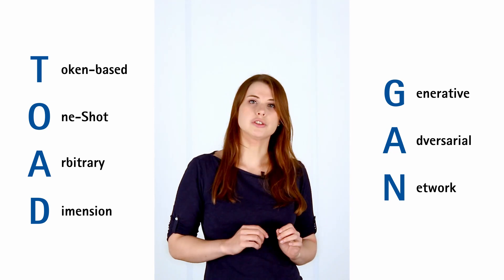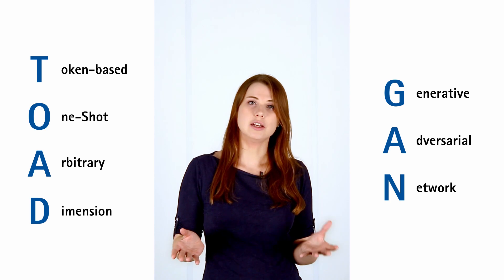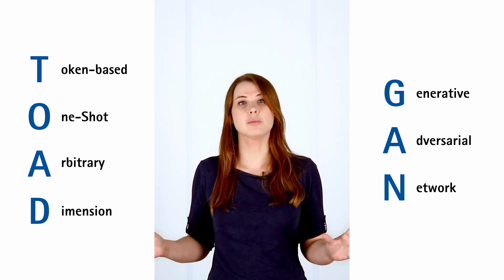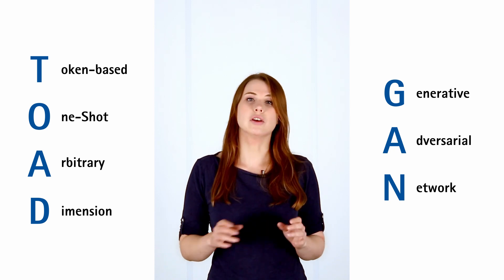Our method is one-shot, which means it only gets one level at a time to train on, and it can generate levels of arbitrary dimensions due to its architecture as a fully convolutional generative adversarial network, or GAN. But what is a fully convolutional GAN, and how does it work?